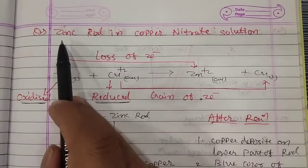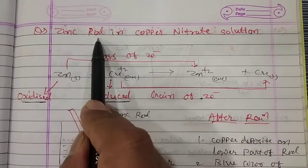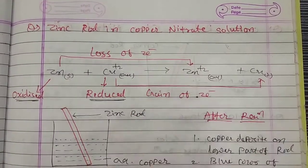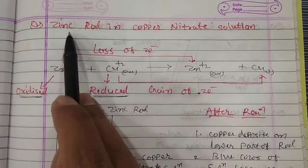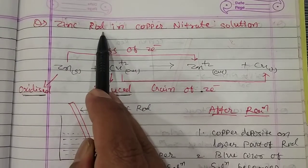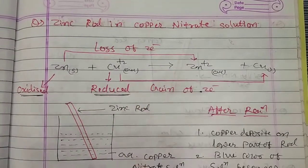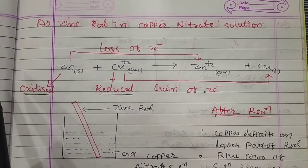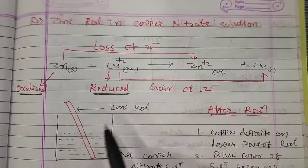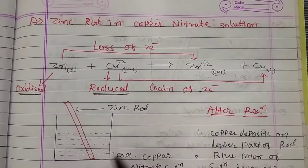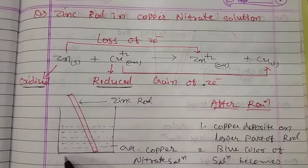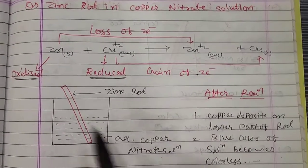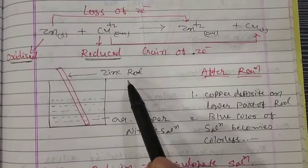The first approach is a zinc rod in a copper nitrate solution. There is a pictorial diagram showing an aqueous solution of copper nitrate, and we will dip in a zinc rod.